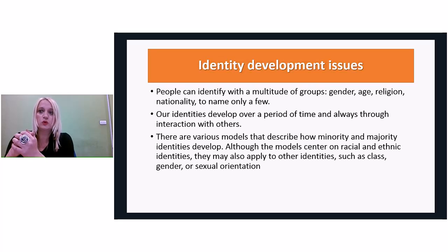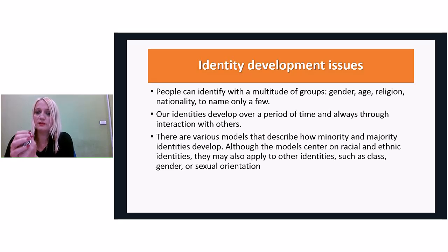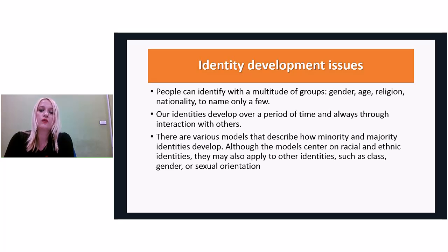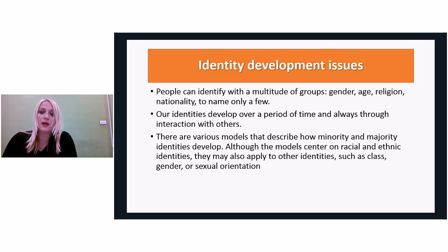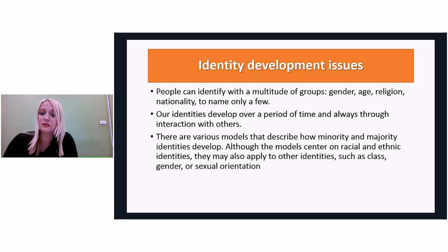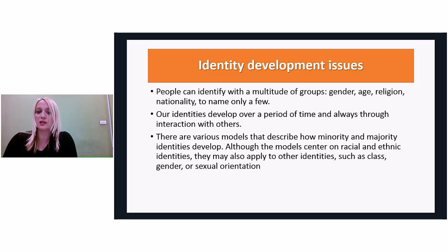What I thought would be useful to mention is the identity development issue. People can identify with a multitude of groups — gender, age, religion, nationality. Our identities develop over a period of time, always through interaction with others. In theory there are different models describing how minority and majority identities develop. Although some models center on racial and ethnic identities, they may also apply to other identities such as class, gender, or sexual orientation.